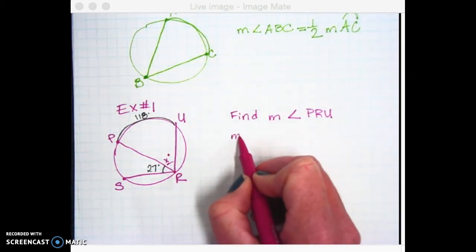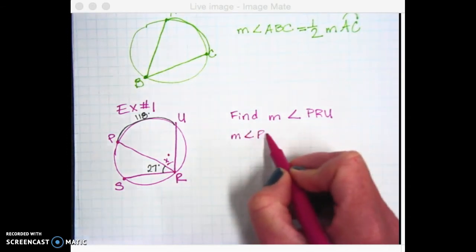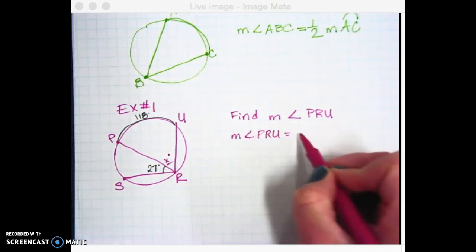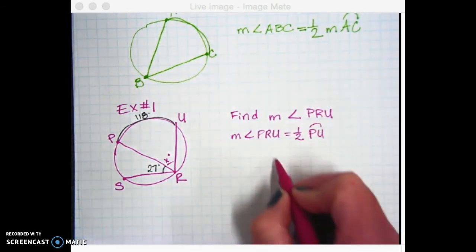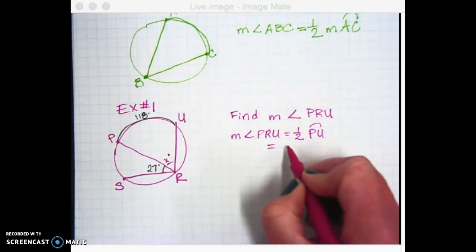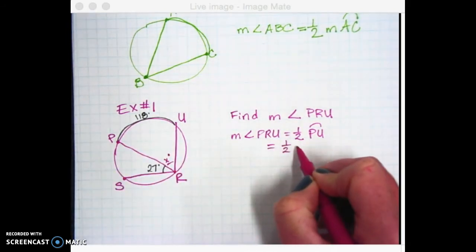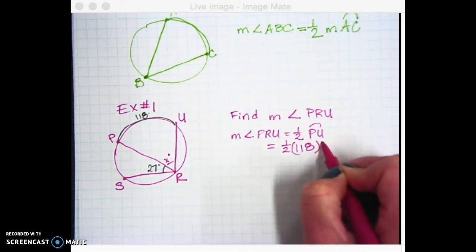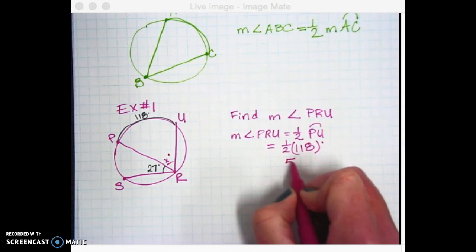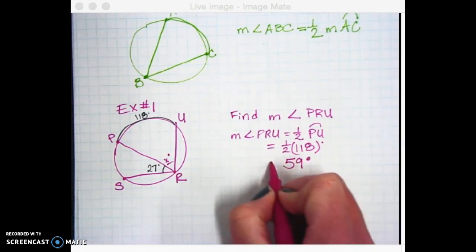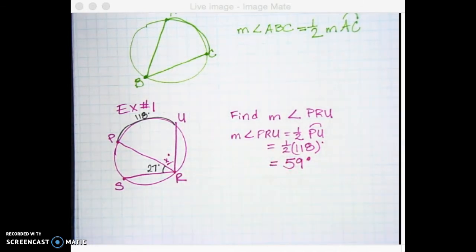So we're going to say that the measure of angle PRU is going to be equal to half of that arc PU. So we actually have a measurement there of 118 degrees. So we're going to say half of 118 degrees. You type it into your calculator. You should get 59 degrees.